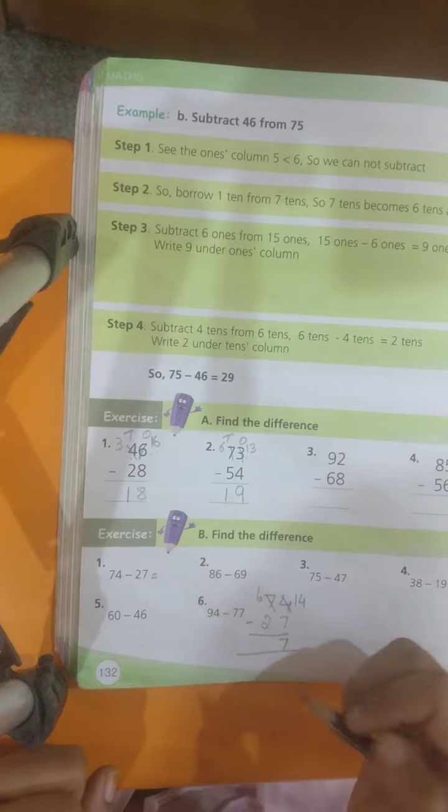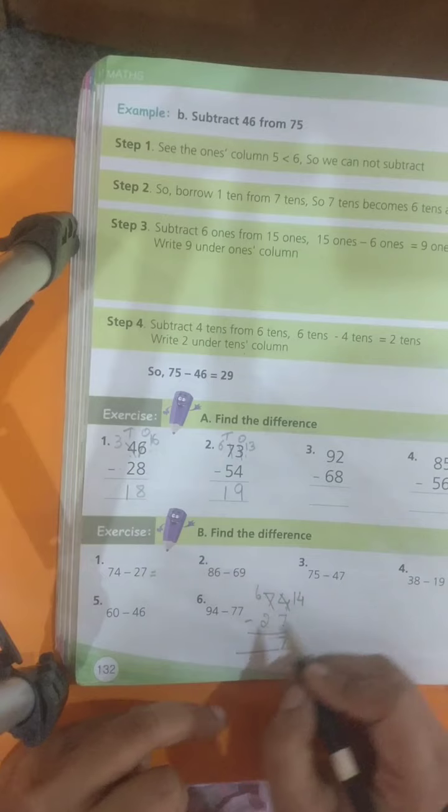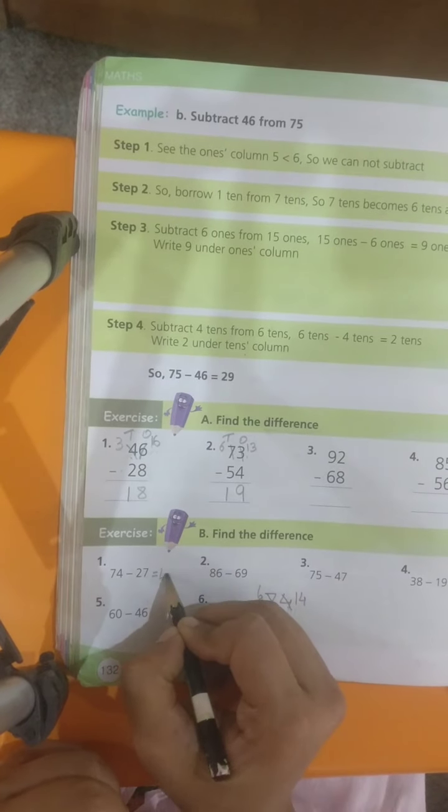Next, 6 minus 2. 6, close 2. So, 4 is my answer. My answer is 47.